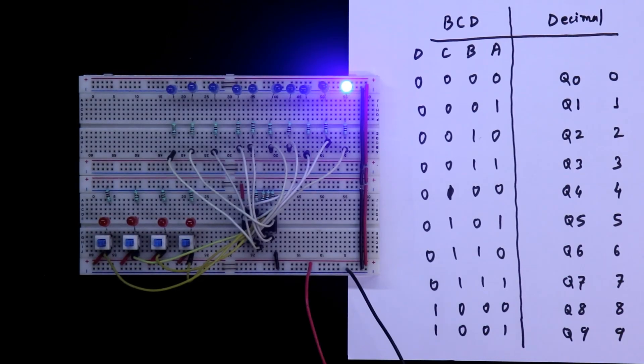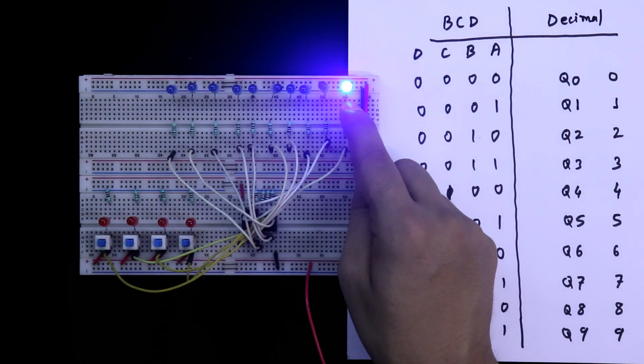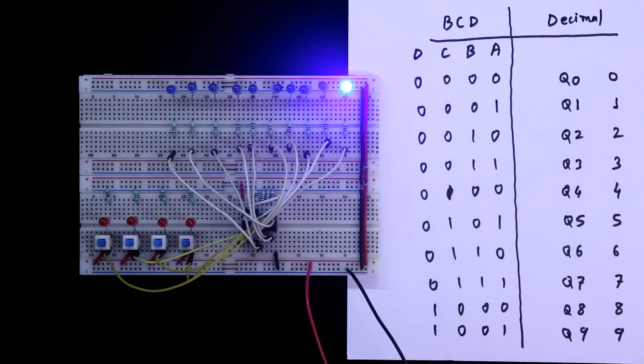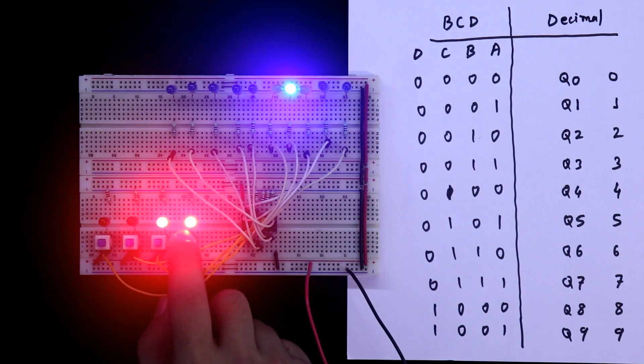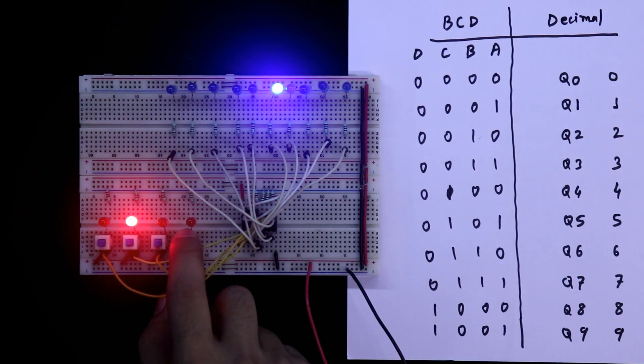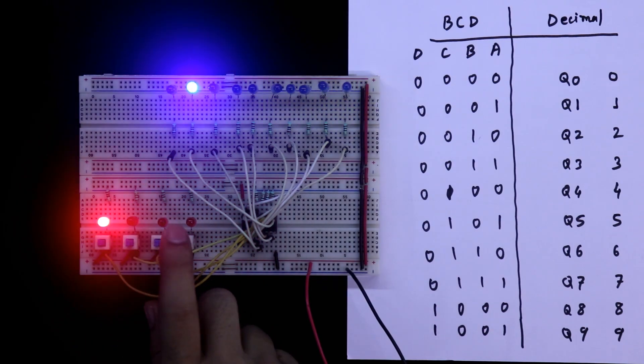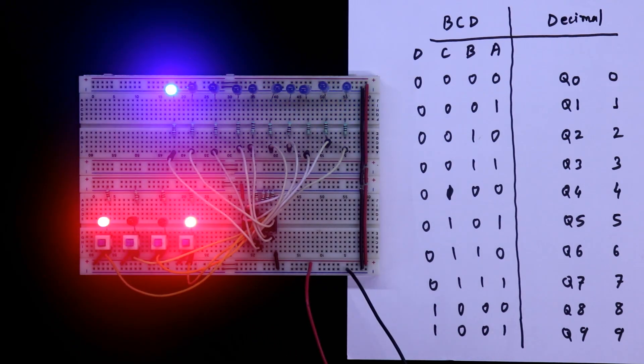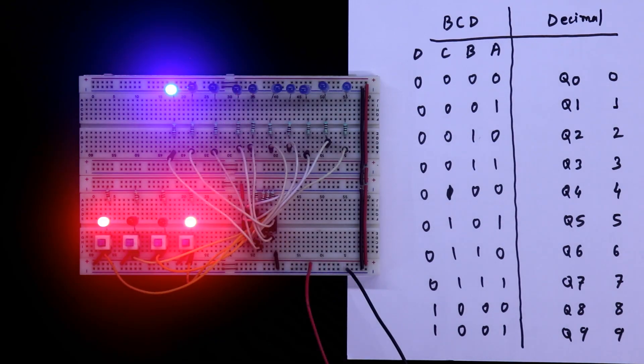Hello guys, in this video we are going to see the IC4028. It is a BCD to decimal converter. Here our BCD input is 0 and we are getting the output as Q0 or 0. This is 1, 2, 3, 4, 5, 6, 7, 8, and 9. So this is how it converts BCD to decimal. Let's get started.